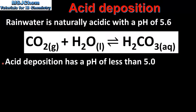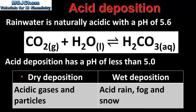Acid deposition has a pH of less than 5.0. In this table we can see the two types of acid deposition: dry deposition and wet deposition. Dry deposition consists of acidic gases and particles, whereas wet deposition consists of acid rain, fog and snow. To summarize, rainwater is naturally acidic with a pH of 5.6, whereas acid deposition has a pH of less than 5.